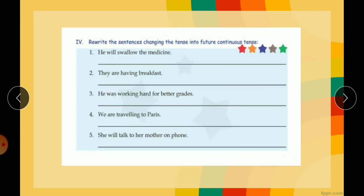Now coming to the last exercise, rewrite the sentences changing the tense into future continuous tense. He will swallow the medicine. Again you have to do the same thing, find out the verb. In future continuous tense you have to use first form with ing. So whatever verb is there, change it to first form and add ing, and then before that add will be or shall be. Here it is swallow, already in the first form, so it will become swallowing. And after will you will be adding be. So he will be swallowing the medicine.